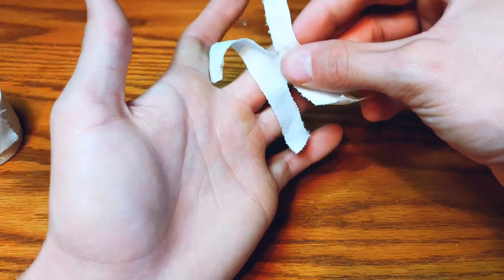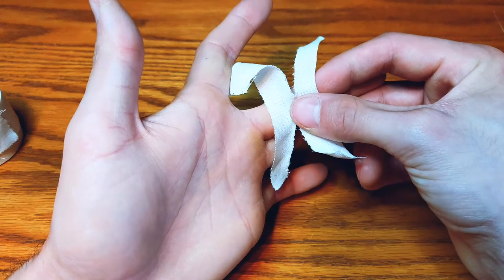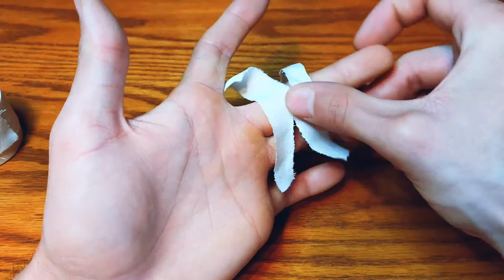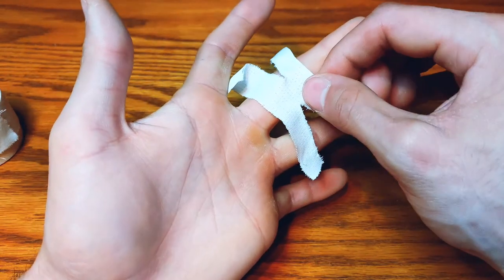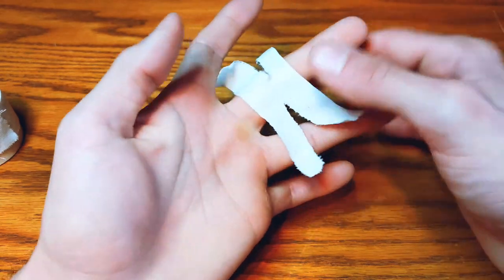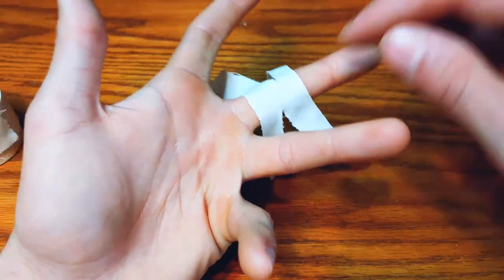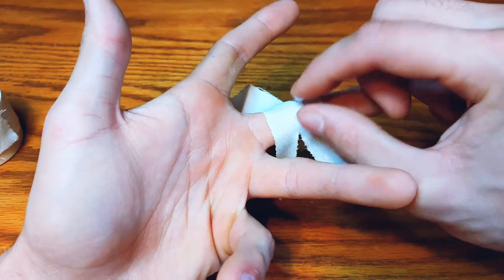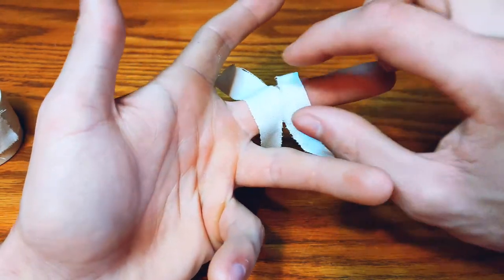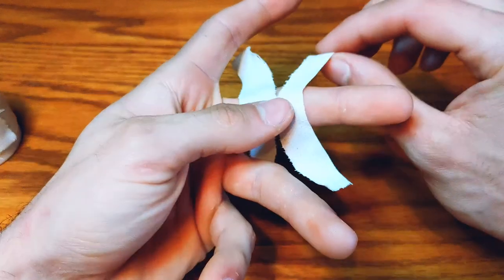We're going to place the sticky side right on the inside of our finger. We're going to try and have that point at which we tore right on the joint. We're going to make sure we tear these to about the thickness of our finger, so you can gauge that for your own finger.